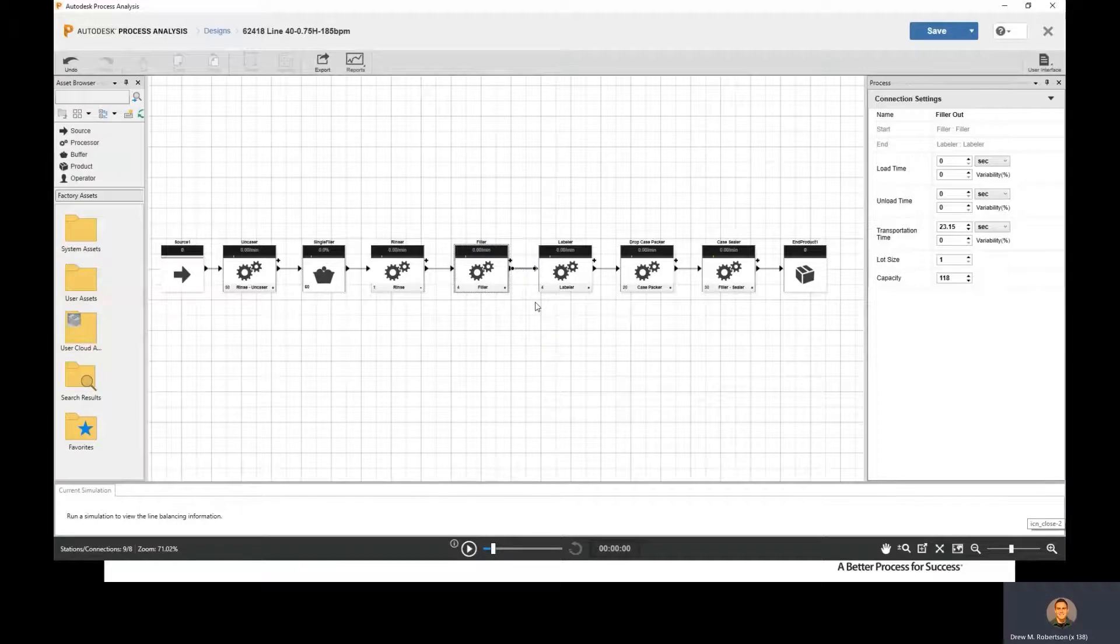And then each one of the lines in between represents a set of conveyors, and it's going to have the transportation time in there. How fast is the bottle going from the filler to the labeler? And then how much capacity is on that conveyor?